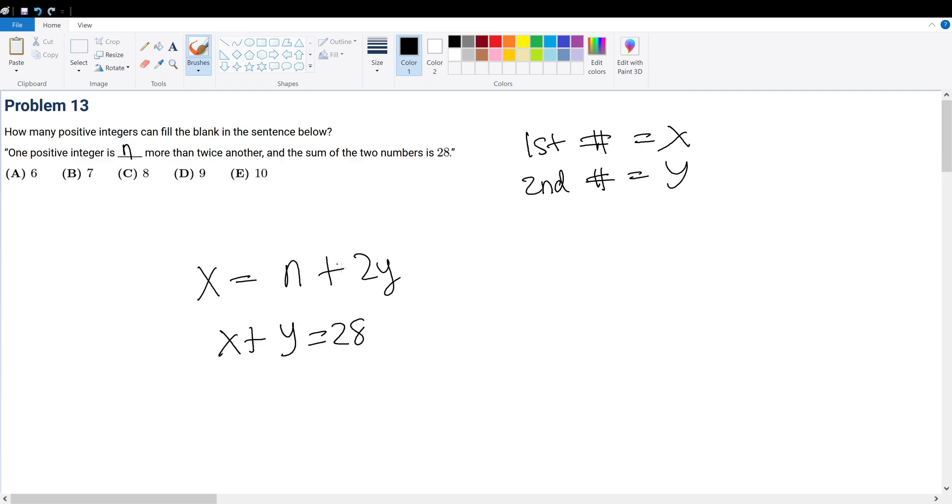Wait a minute, this is obviously a substitution question. So let's substitute x into this equation. We get 3y + n = 28, and we're basically just trying to find how many possible values of n there are.